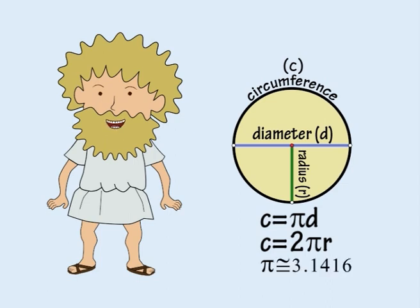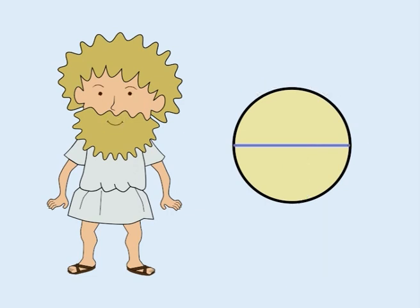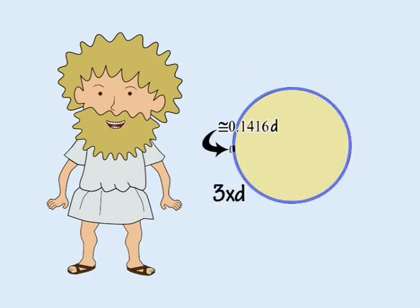Using 3.1416 as an approximation of pi, this means that the distance around the perimeter of a circle is 3 and a bit diameters if the diameter length line segments could be bent into curves that fit around the perimeter.